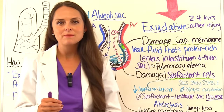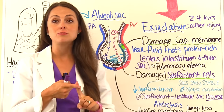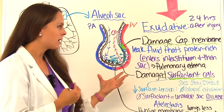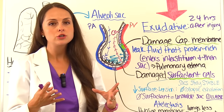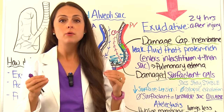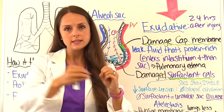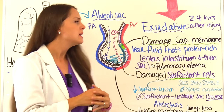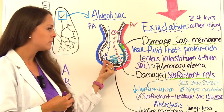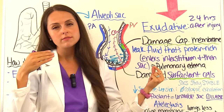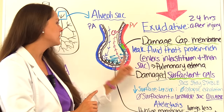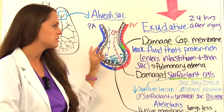The exudative phase happens about 24 hours after injury. Whether from a direct or indirect injury, there's damage to the capillary membrane, causing protein-rich fluid to leak into the sac. Because protein regulates water via oncotic pressure, this draws even more water in. Initially the fluid enters the interstitium — the space between the sac and the capillary membrane — so early lung sounds may sound normal or slightly diminished. Abnormal lung sounds only develop once fluid moves into the alveoli sac.